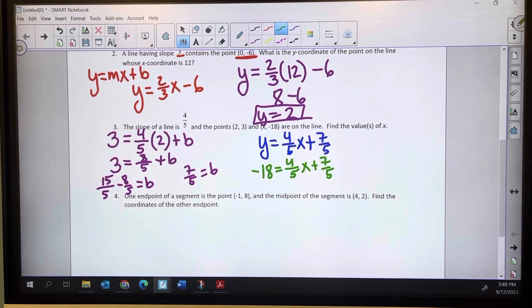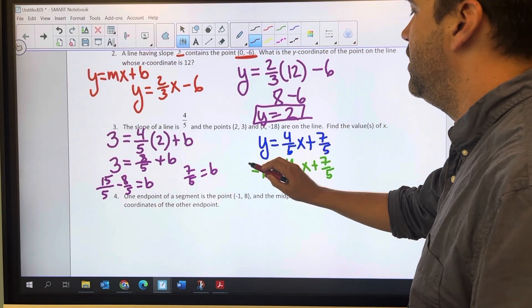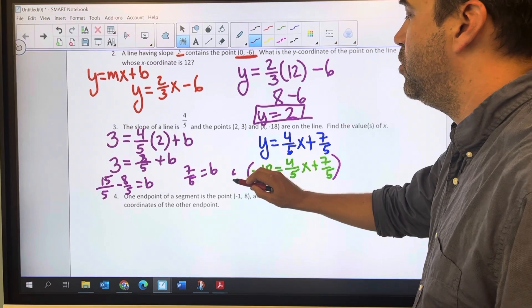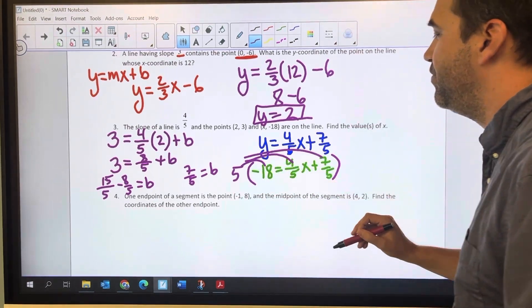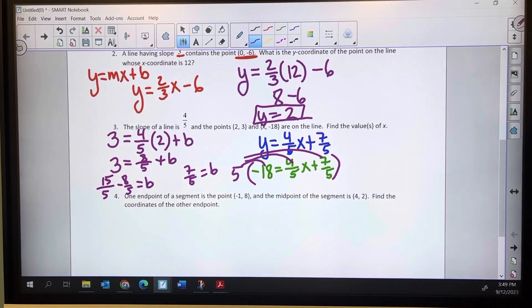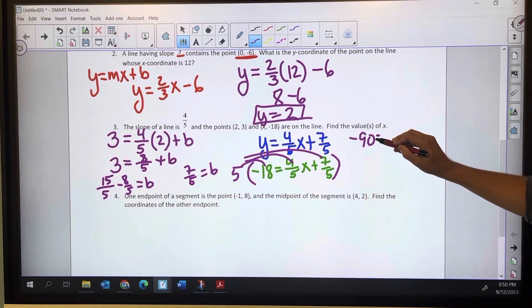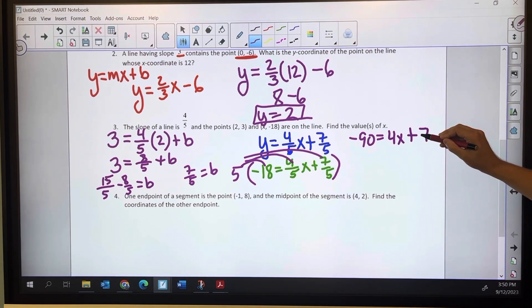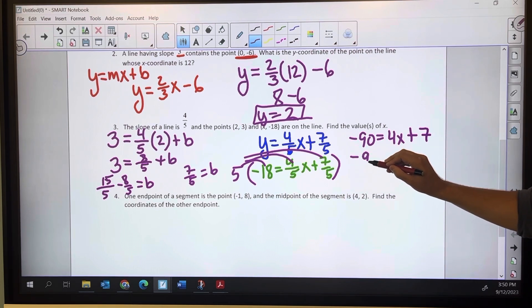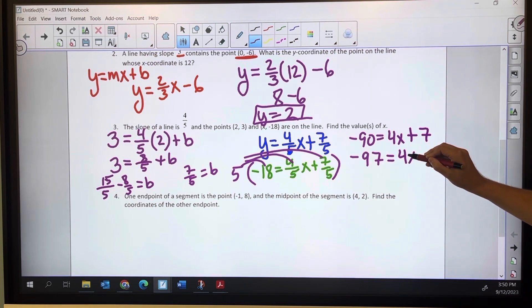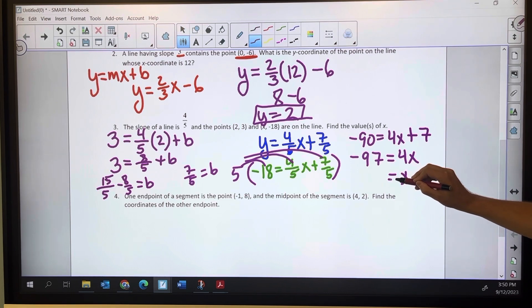At this point, you've got a couple different choices. We can multiply by 5 to kind of get rid of that denominator. We can also just deal with the fractions as they are. For me, I like to go ahead and multiply by 5, and that's going to distribute to everything. The 5 times negative 18 is going to give me negative 90. 5 times 4 fifths is just 4x, and 5 times 7 fifths is just 7. This creates a little bit easier problem to solve. x equals negative 97 fourths.